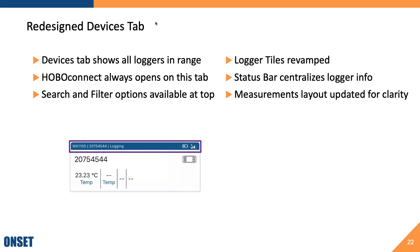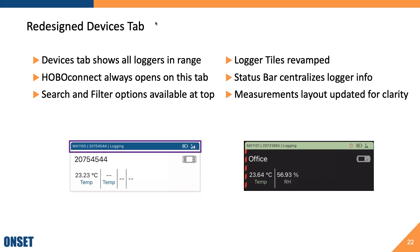On the right-hand side of the status bar you'll always see the battery level and Bluetooth connection strength, and you may additionally see a lock icon for password-protected loggers or an alarm bell icon if an alarm has been tripped. You'll also see the familiar barber stripes on the left side of the tile when a logger is in an alarm state. In the main section of the tile, we've updated the layout to give more prominence to key items — the logger name is now in a bigger, more centralized font, we've added a logger icon, and we've moved to a horizontal layout for measurements with short-form labels for easier identification.